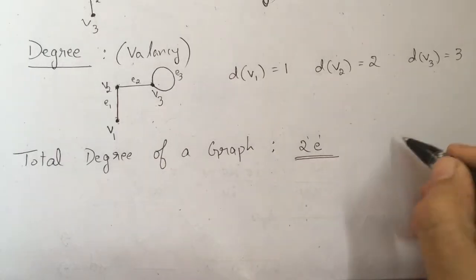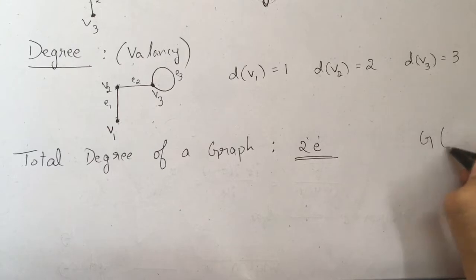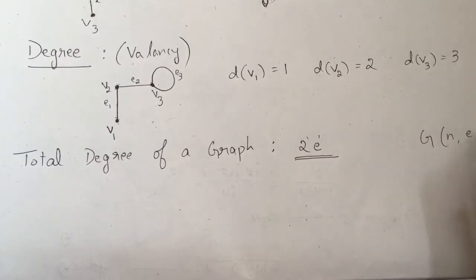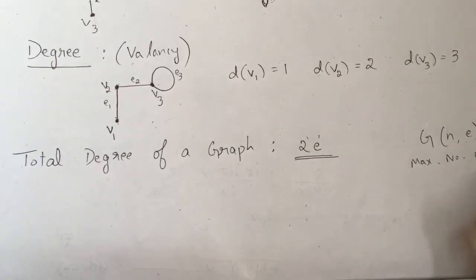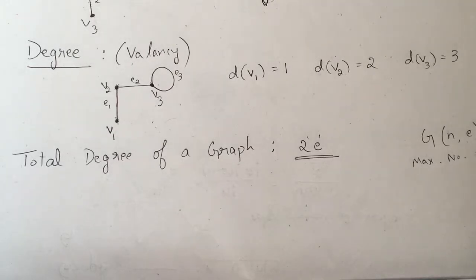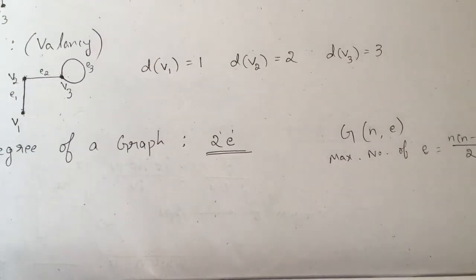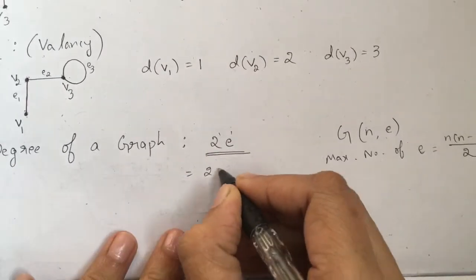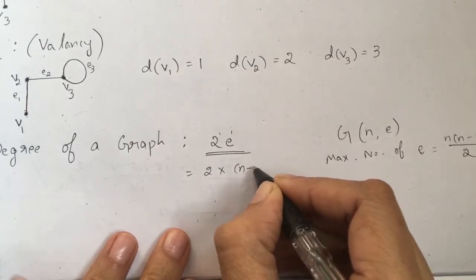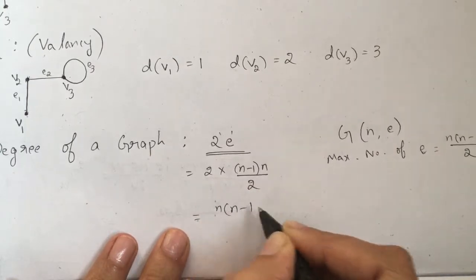Now, how many edges are there in a simple graph of n vertices? If the graph has n vertices and e edges, the maximum number of edges can be found: the total degree equals 2 times n minus 1 divided by 2, giving total degree equals n times (n minus 1), so the maximum number of edges is n(n−1)/2.